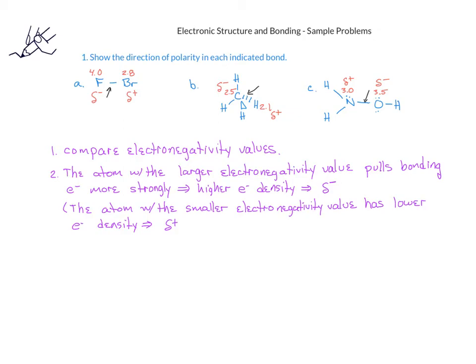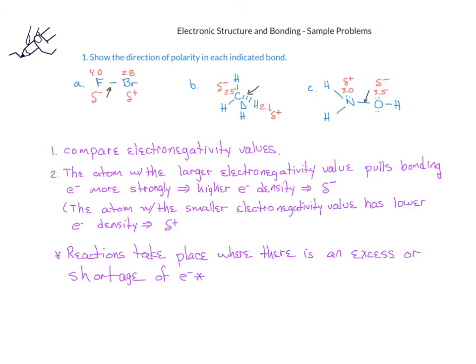This is going to be important because one rule of thumb that you'll learn is that, in general, reactions take place where there's an excess or shortage of electrons — in other words, where there's a lot of electrons in a small space or there's a shortage of electrons in a small space.